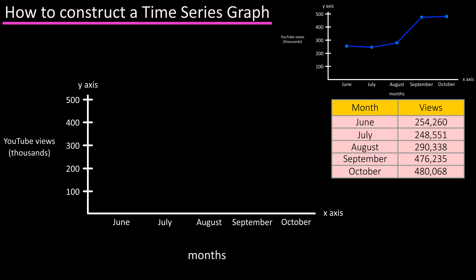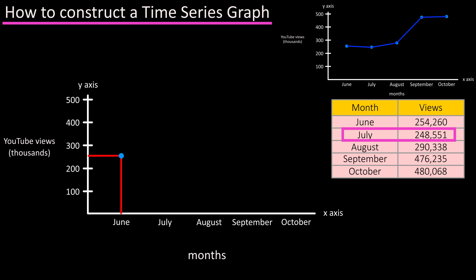Next we're going to plot the points on the graph. From the first row in the table we have June as our x-axis value and 254,260 views as the y-axis value. Find that point of intersection in the graph and put a dot there. Then July and 248,551 views — find that point of intersection and plot a point, and continue this process for the remaining data.